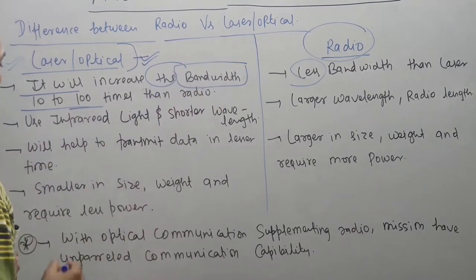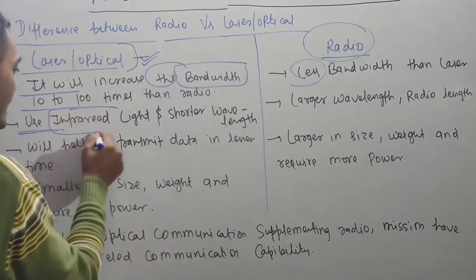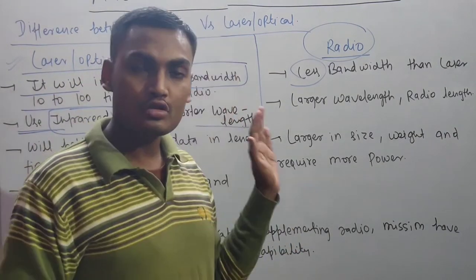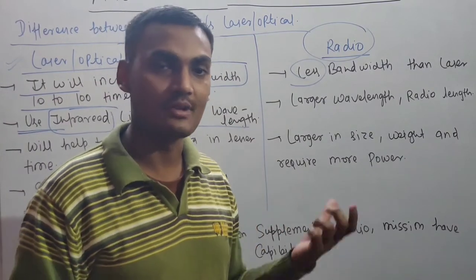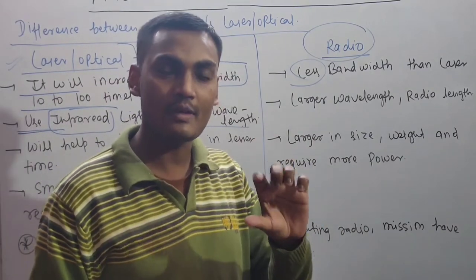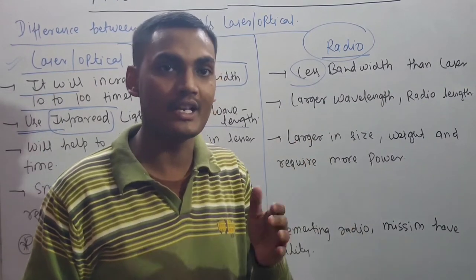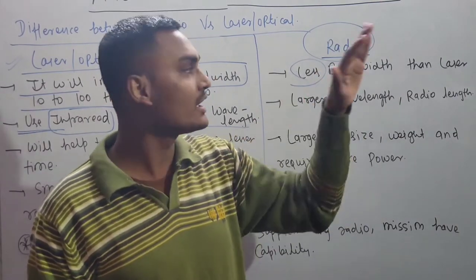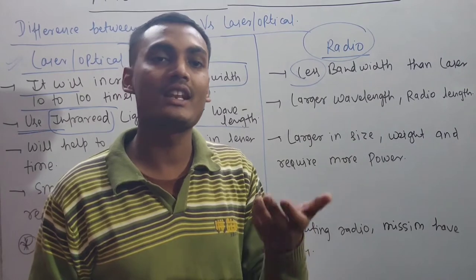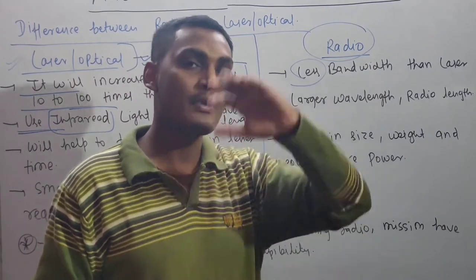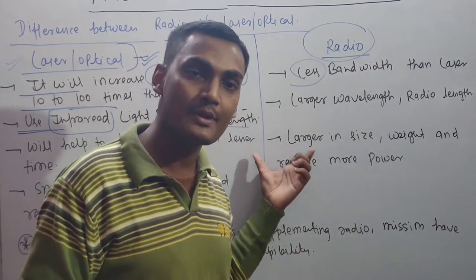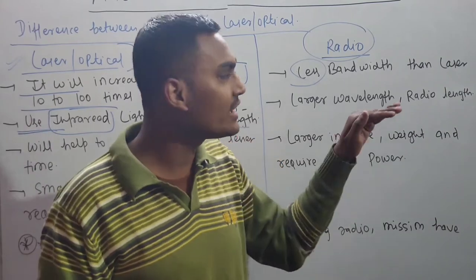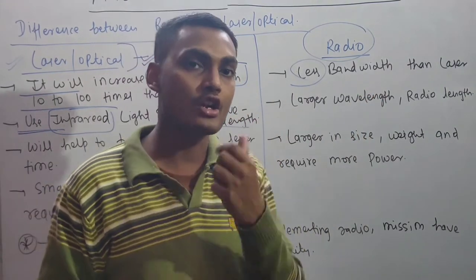Laser communication uses infrared light and has a shorter wavelength. A shorter wavelength enables speedier data transfer. For instance, a signal traveling from Earth to Mars might take 50 days via radio frequency, but with laser or optical communication it could take just 5 to 10 days — a major advantage of the shorter wavelength.